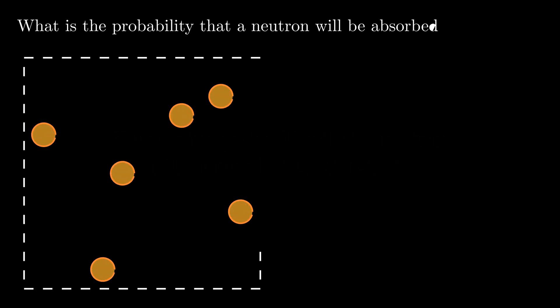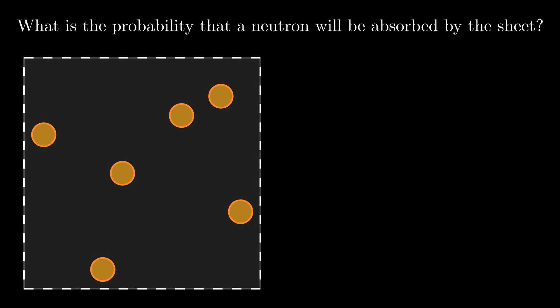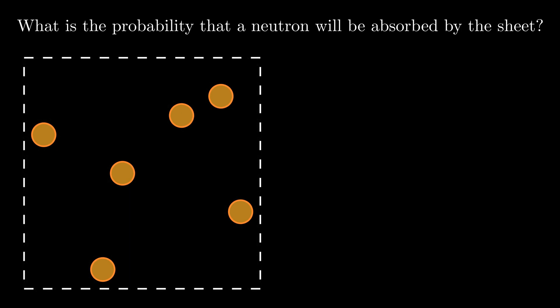An intuitive way to go about this would be to take a look at the sheet head on. Notice that the nuclei of the atoms take up a good chunk of the sheet's area, but there's still some gaps left over. If we imagine our neutron beam is firing neutrons at the sheet with random positions, it stands to reason that the probability of a neutron being absorbed is equal to the fraction of the sheet's area taken up by the nuclei.